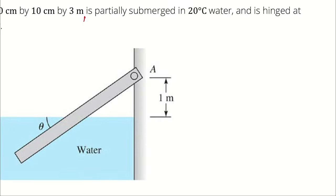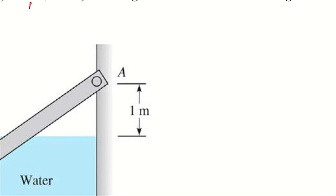Our approach here is going to involve a moment, and that moment is going to say the moment around point A must equal zero, because it's in equilibrium. It is static.